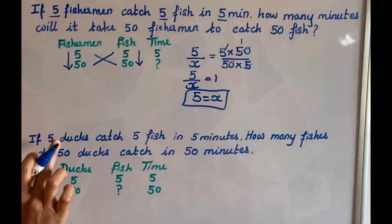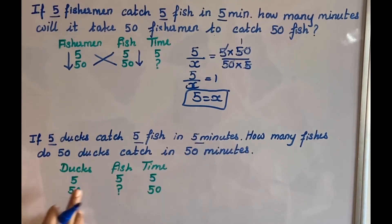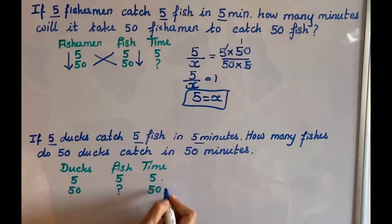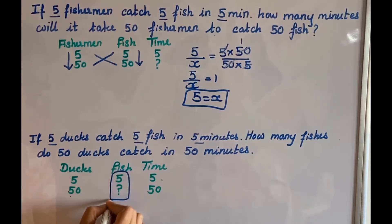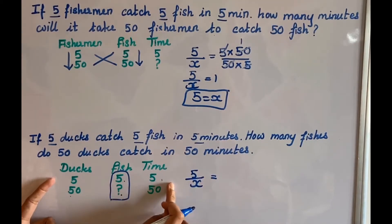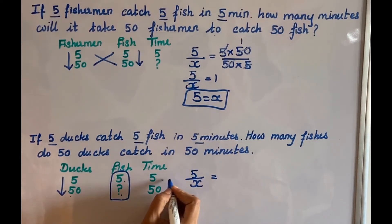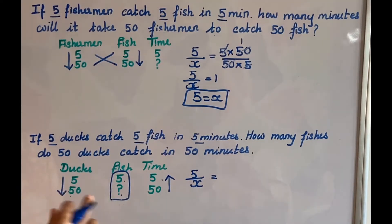Next, let's do this one. 5 ducks catch 5 fish in 5 minutes. How many fish do 50 ducks catch in 50 minutes? Ducks increased, time also increased. The unknown is the number of fish, so let's take that as x — written as 5 divided by x. Now let's find the relationship between ducks and time. When the number of ducks increases, they catch more fish in less time, so time decreases. This is indirect proportion.